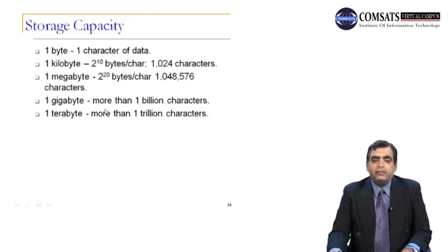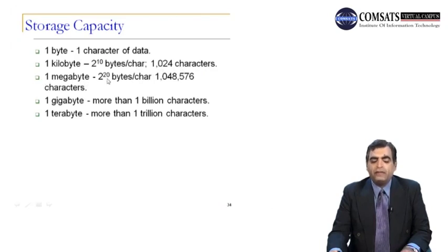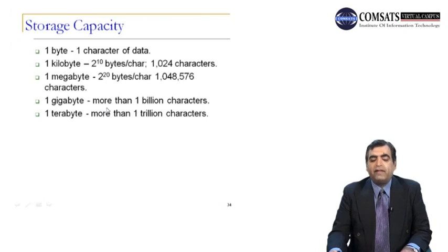Let's talk about the measurement of storage capacity. One byte means one character of data that can be stored — a byte is basically a collection of eight bits. One kilobyte is 2 to the power of 10 bytes, meaning 1,024 characters. One megabyte is 2 to the power of 20 bytes, meaning 1,048,576 characters. A gigabyte is 2 to the power of 30 — more than 1 billion characters. And one terabyte is more than one trillion characters.